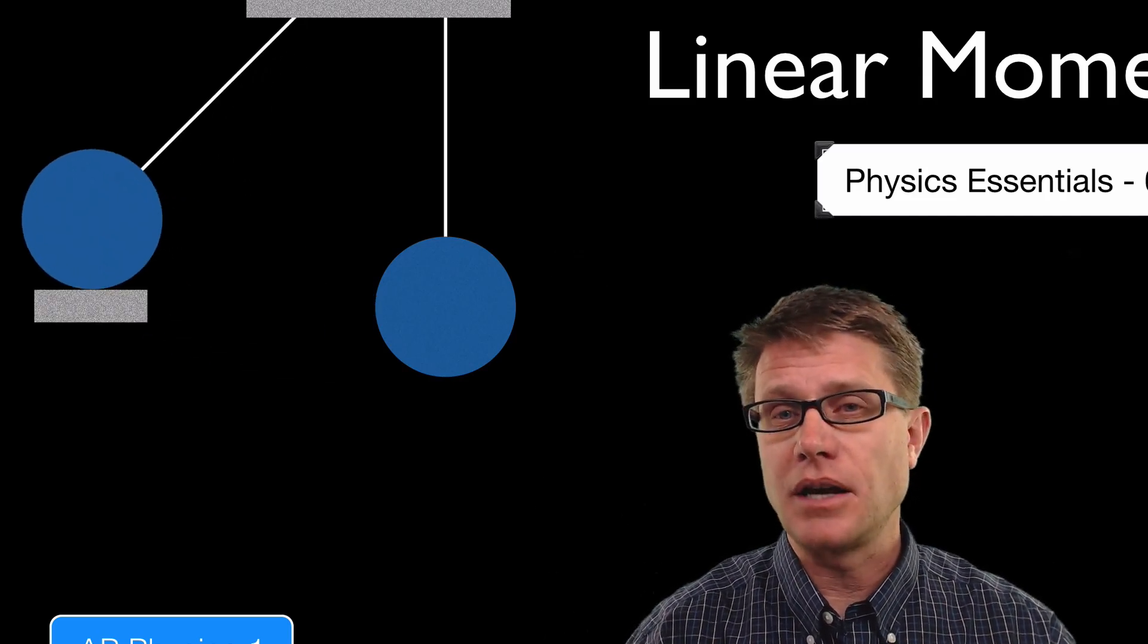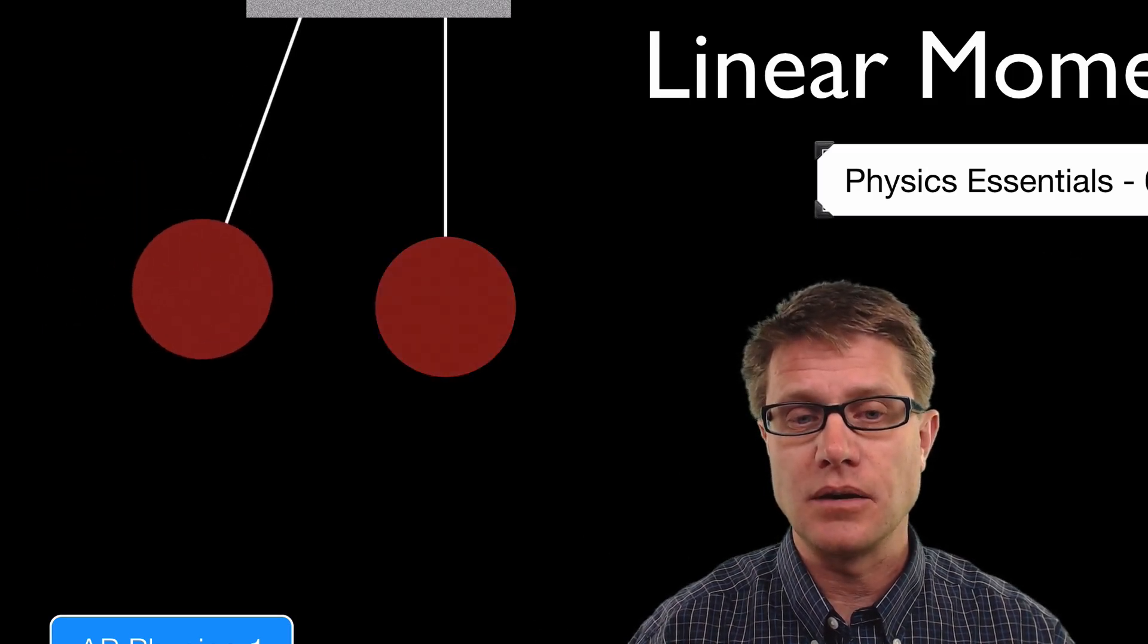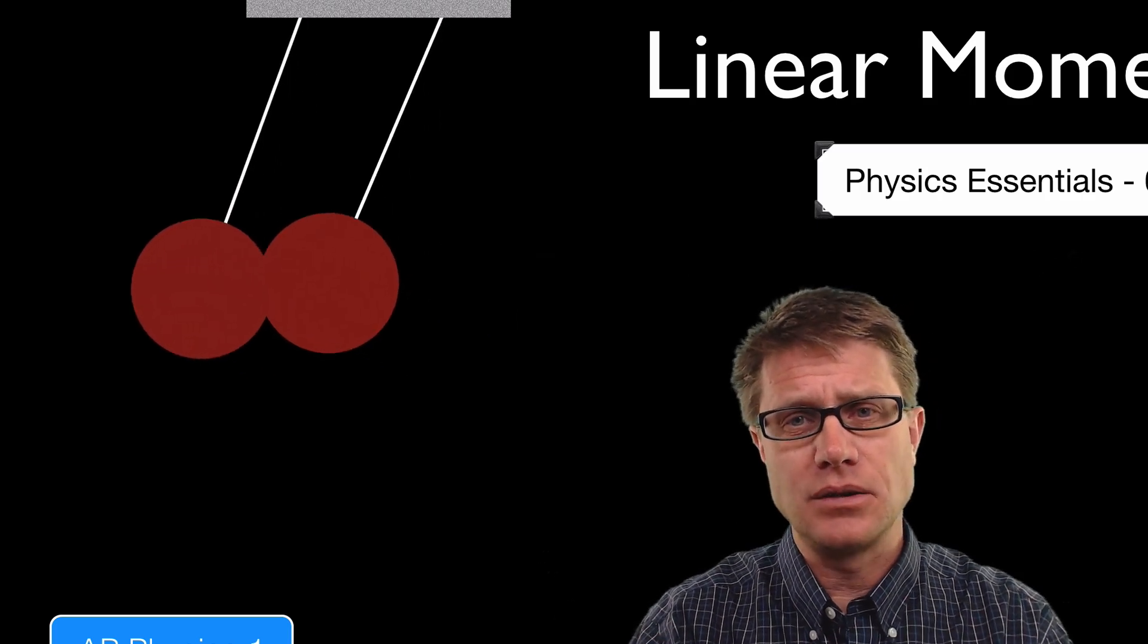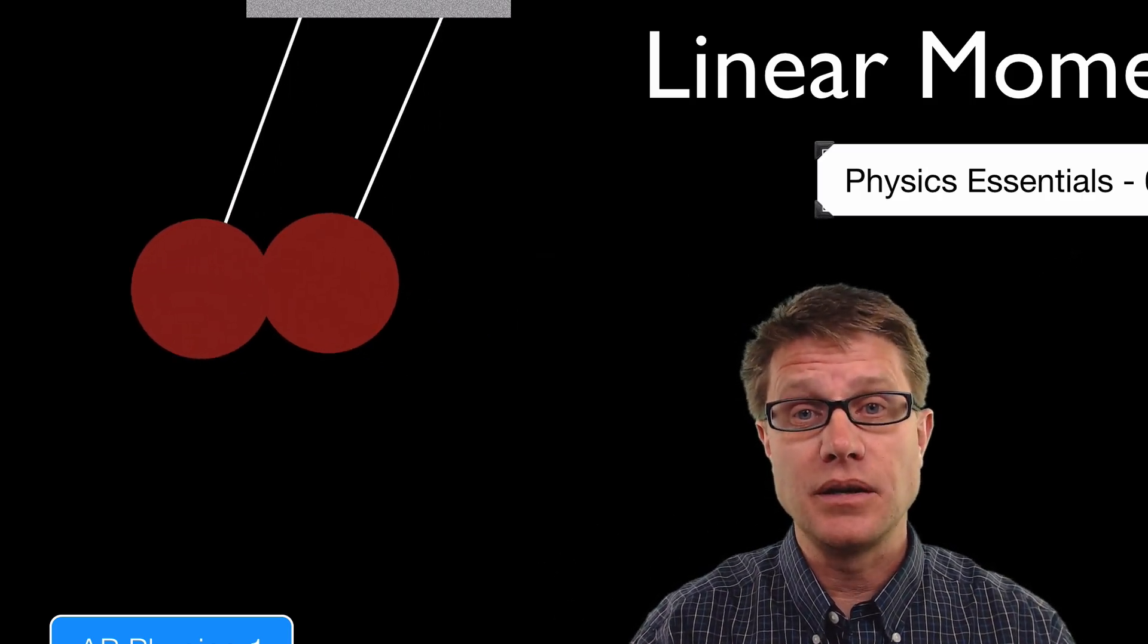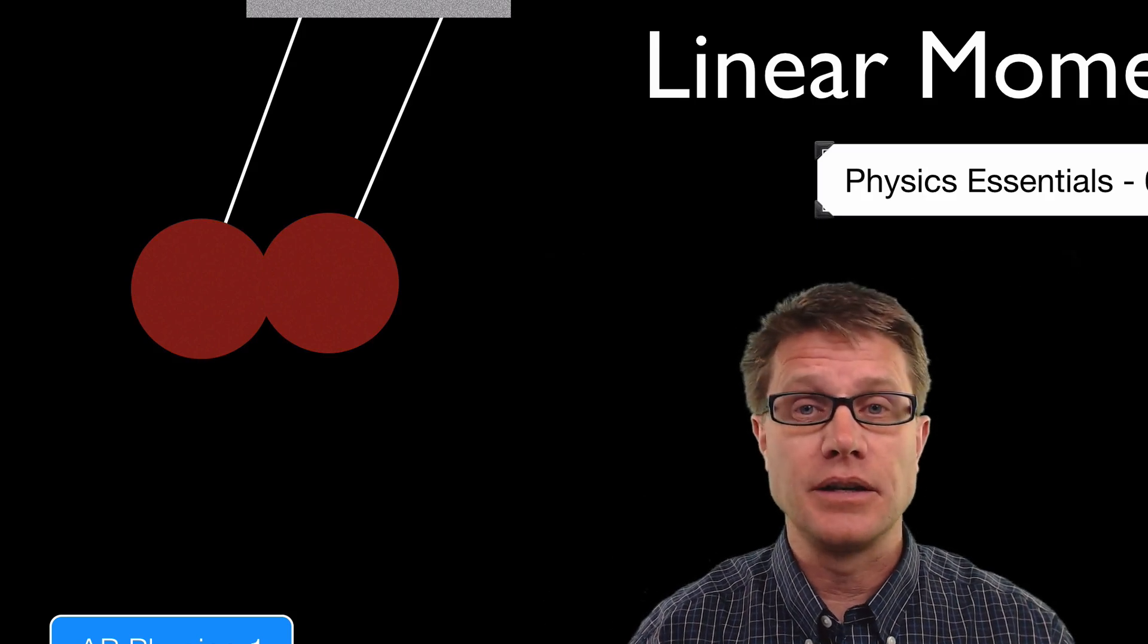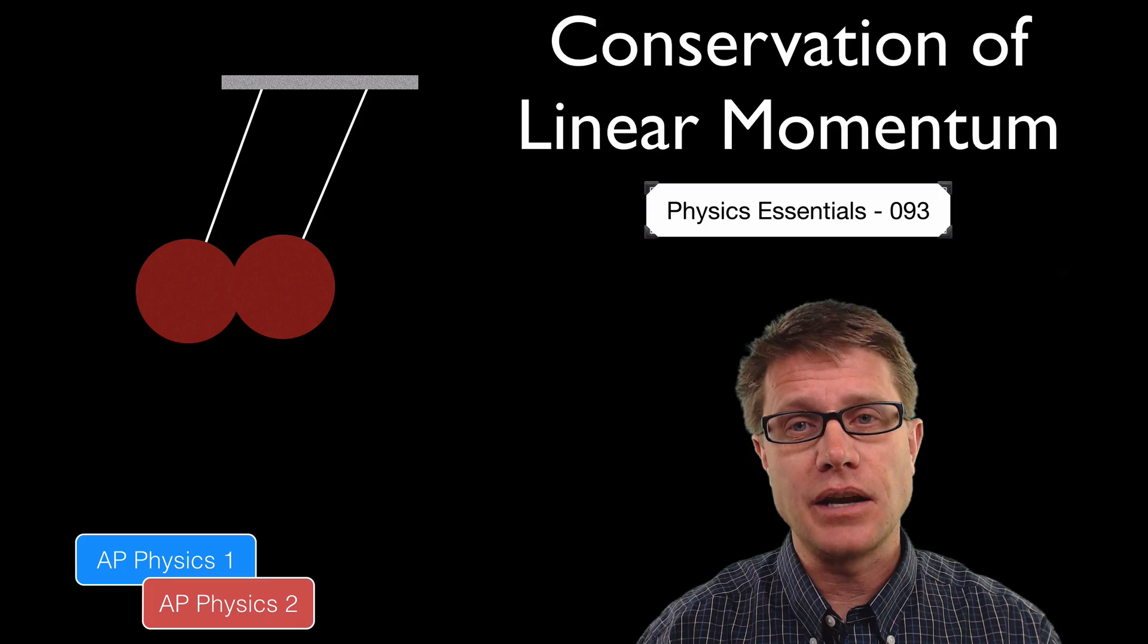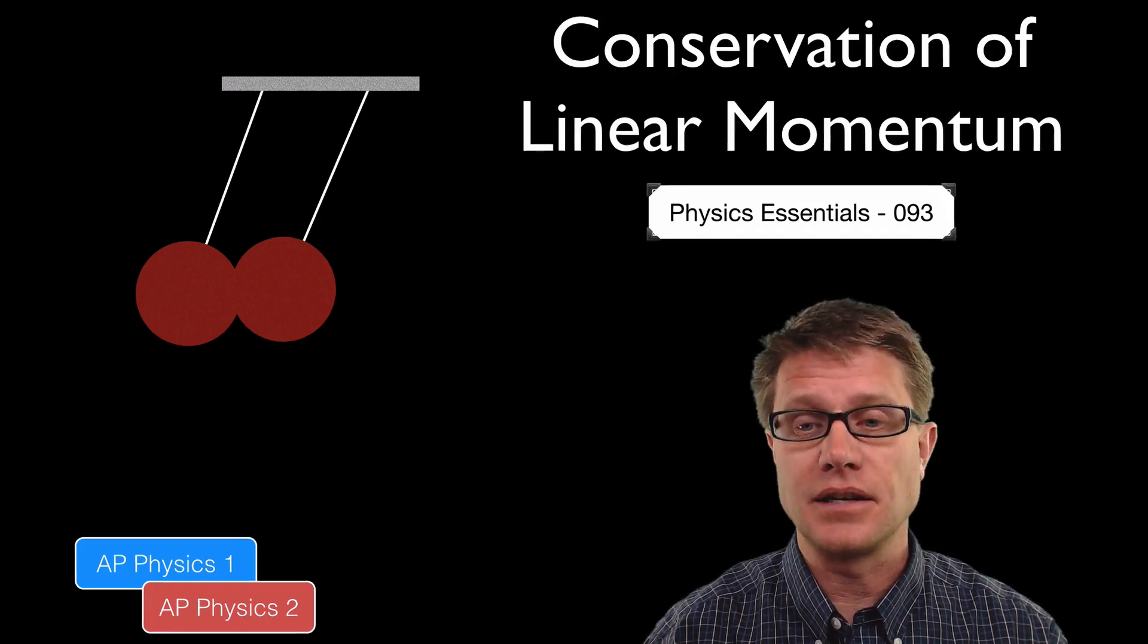But what would happen if I made it out of a different material? Let's say I made it out of clay. Watch what happens here. Instead of just bouncing off they come connected to each other. And so what is really lost we are losing some of that speed. We still conserve our linear momentum but we lost some of that kinetic energy. And if we lose kinetic energy we call that an inelastic rather than an elastic collision.